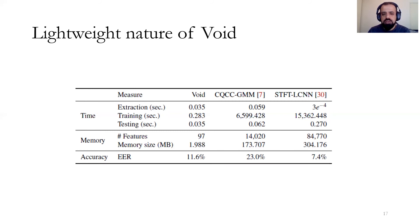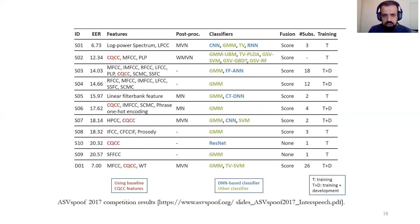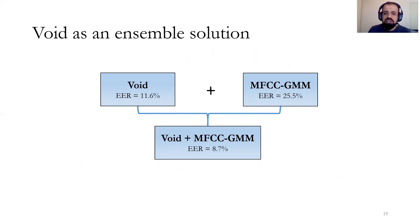Here we show the top 10 performing approaches in the ASVspoof competition in terms of their EER, along with the features and classifiers they use. Void would stand at second position with an EER of 11.6% in this competition. We also check Void as an ensemble solution — since MFCC and interfilterbank features are already available in smartphones where speech recognition is deployed, combining those features with Void achieves 8.7% EER at no additional cost.